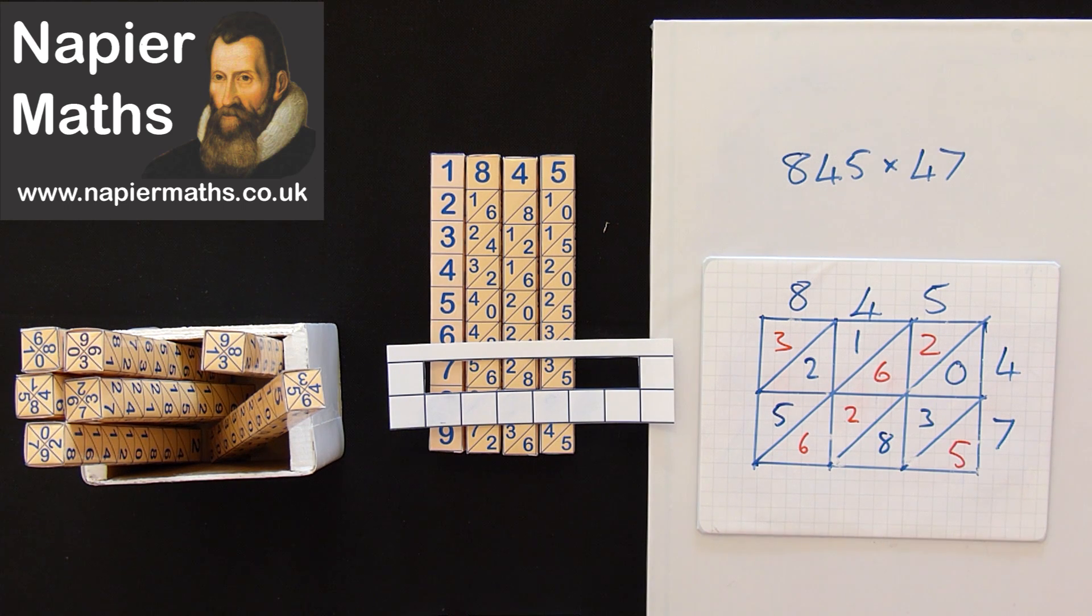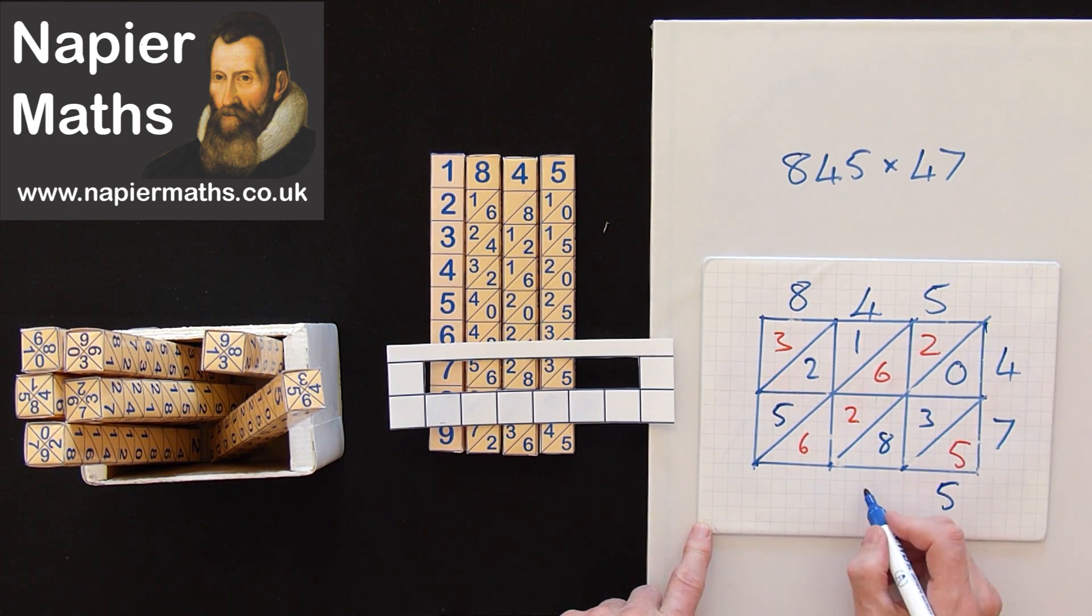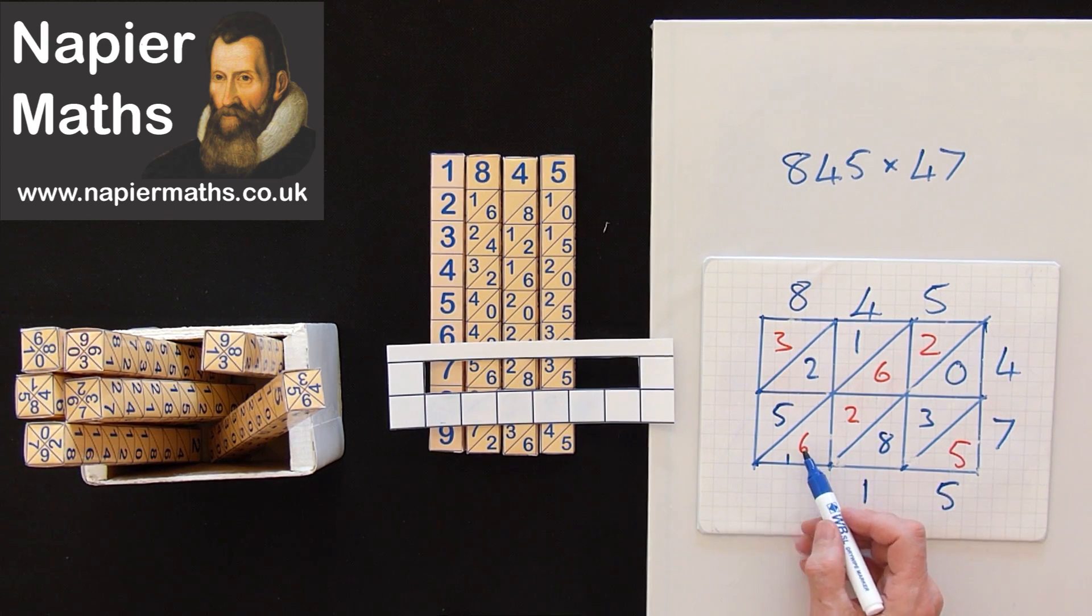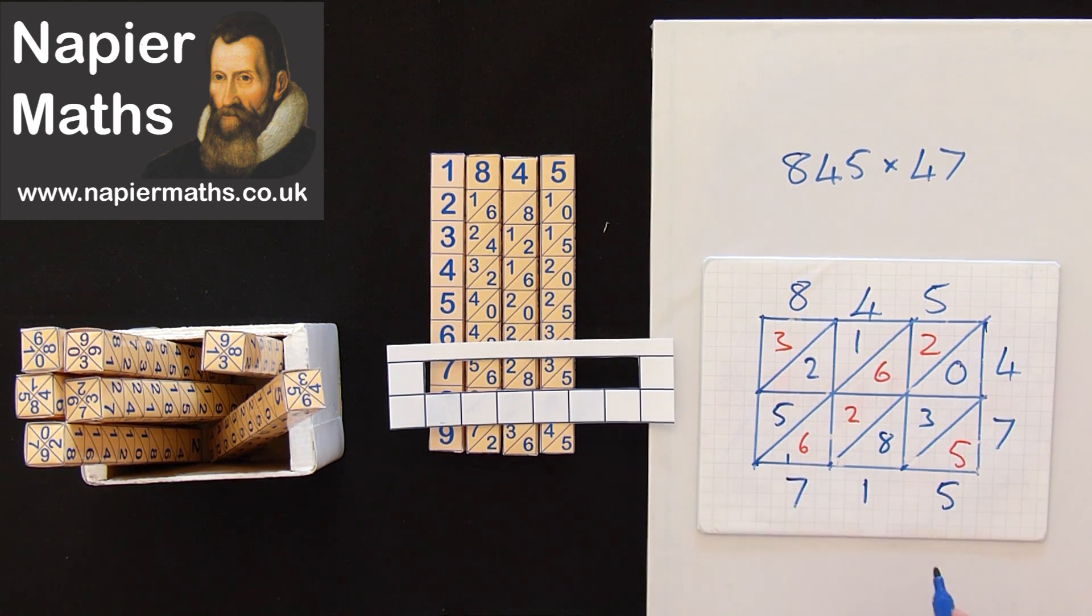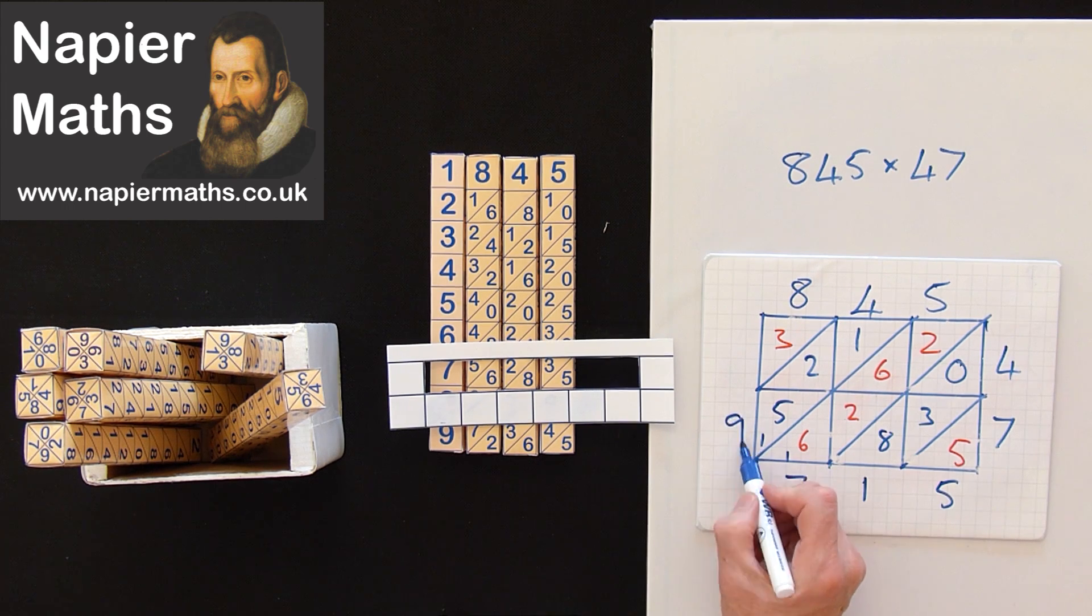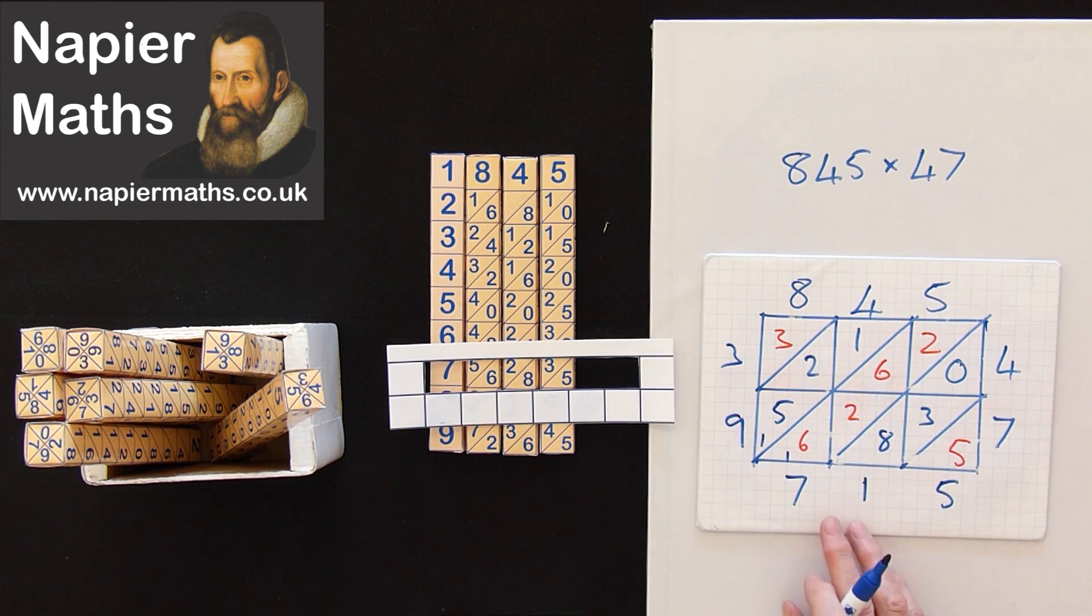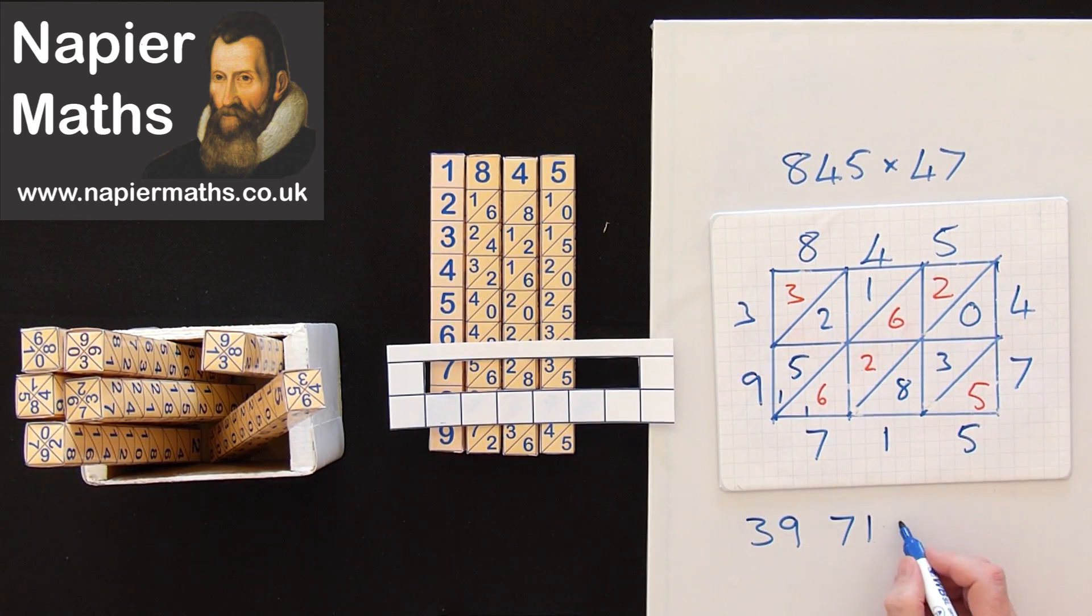You don't need to bother with the colours. All you do now is add down the diagonals. It's the same as what you did with just one bone, but now you've got two bones. So there, down that diagonal gives you 5. That diagonal gives you 8 and 3 is 11. We get 1 and 6 is 7, 9, 15, 17. Carry the 1. You get 6, 7, 8, 9. And you've got a 3 there. So our answer is 39,715.